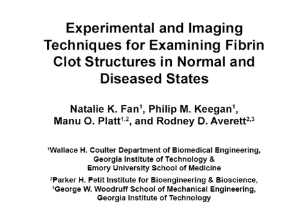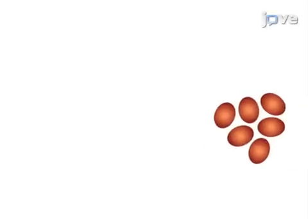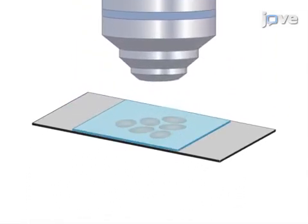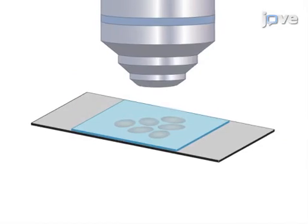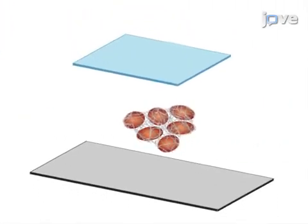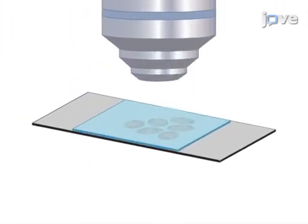The overall goal of this procedure is to examine the morphological differences in abnormal clot structures that occur in diabetes and sickle cell anemia disease conditions. For simulated diabetic clots, this is accomplished by imaging glycated clot structures by confocal microscopy. For blood samples from sickle cell patients, fibrin clots containing red blood cells are imaged.